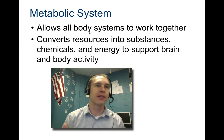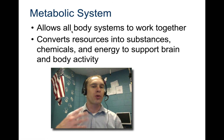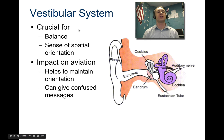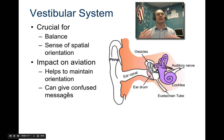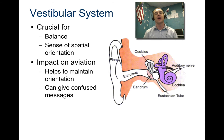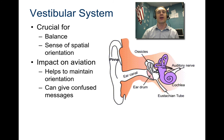The metabolic system — like the liver, gallbladder, and kidneys — allows all the body systems to work together, converting resources into substances, chemicals, and energy to support general brain and body activity. The vestibular system is crucial for balance and spatial orientation — this inner ear system. You spin around in circles and it throws your body off. It has a huge impact on aviation because it helps maintain orientation, but it can also send confused messages about your body's orientation. Specifically in zero G, it makes your body feel like it's constantly falling when it's not. So most people — 70–80% — will get sick in zero G because your body can't figure out why it feels like it's always falling, but when your eyes look around, it doesn't look like you're falling.